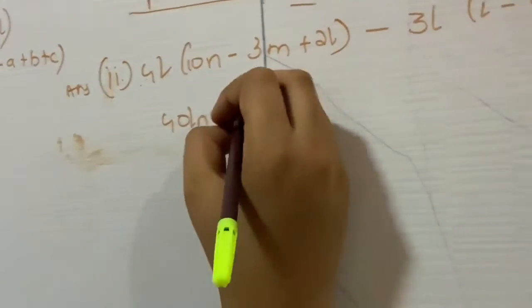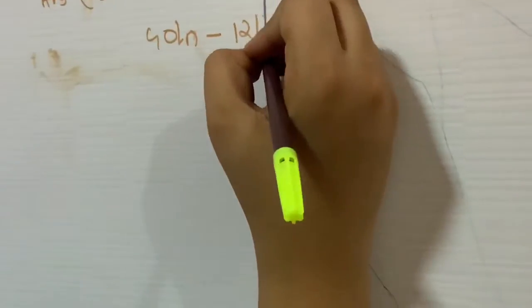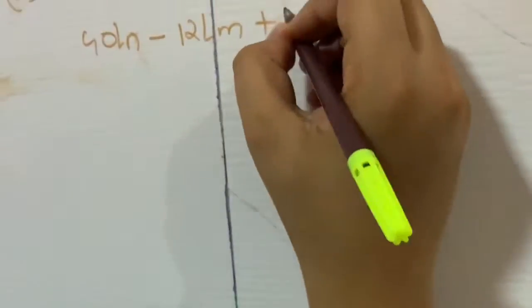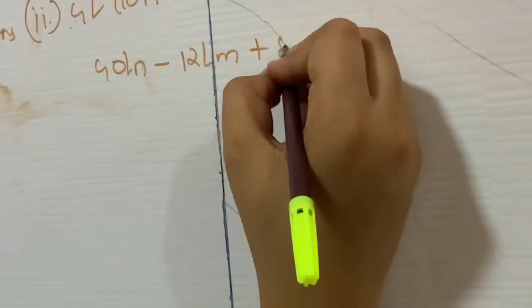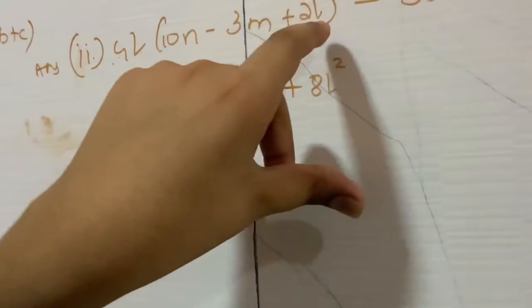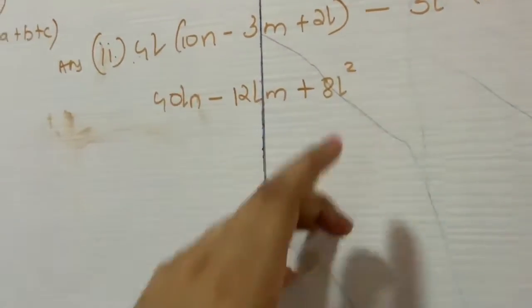Now here it will be 12LM. And the last one is minus. Now 4 plus 2 is 8L square. Now here also it is LN. Here also it is LN. So L into L is L square.